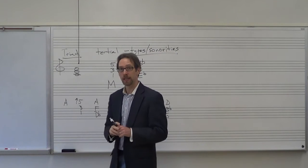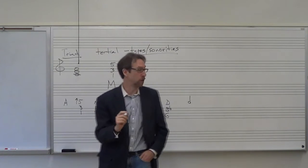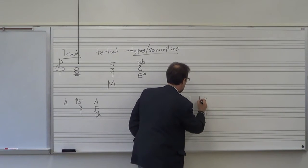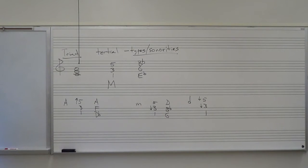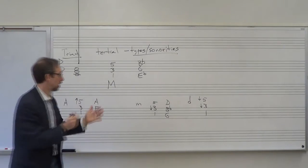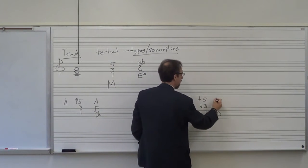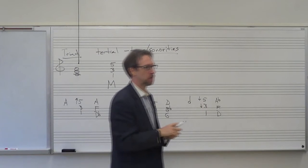Last is our diminished triad. For our diminished triad — 1, 3, 5 always — but we lower the third and the fifth: 1, lowered third, lowered fifth. Let's think of our D major scale: D, E, F-sharp, G, A. So D is good, the F-sharp becomes an F-natural, and the A becomes an A-flat. D, F-natural, A-flat would be our D diminished triad.